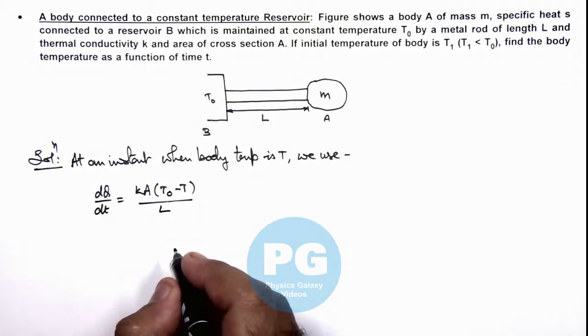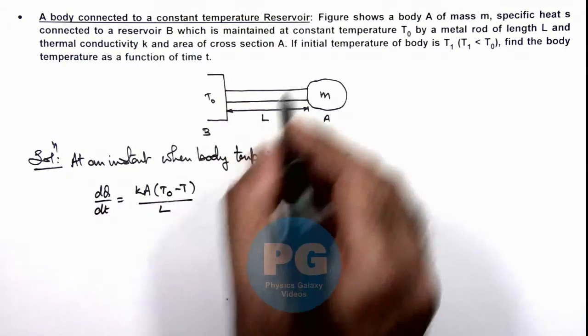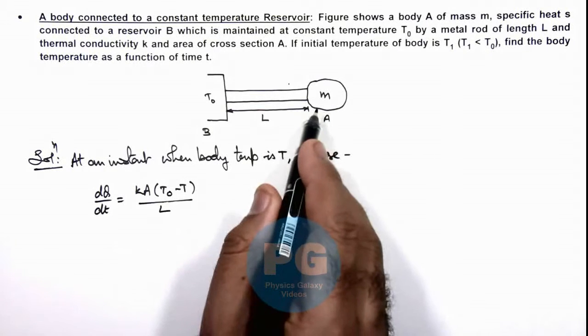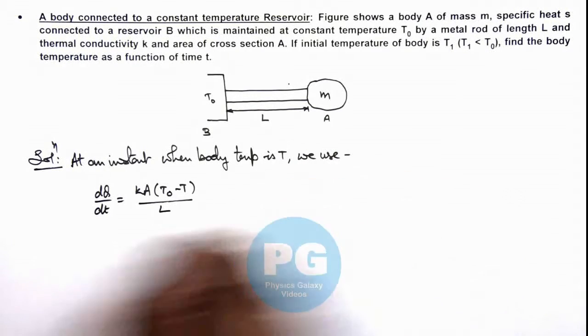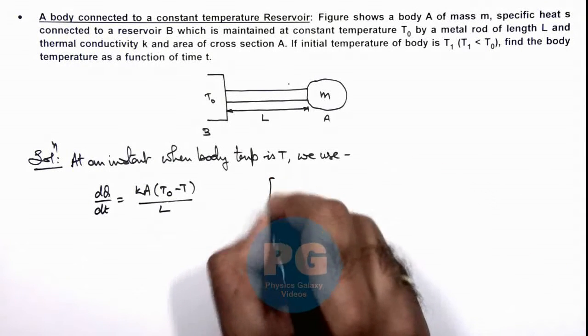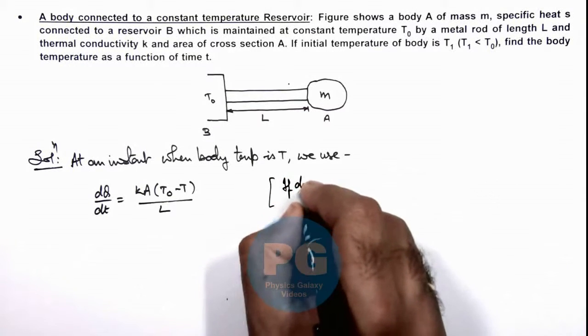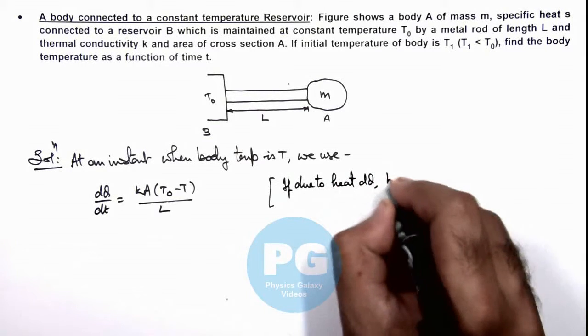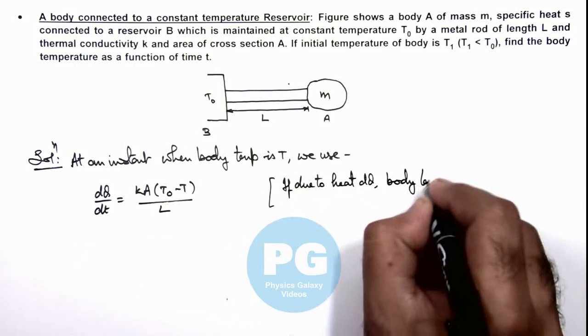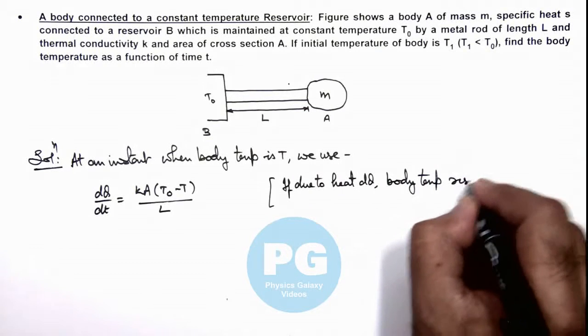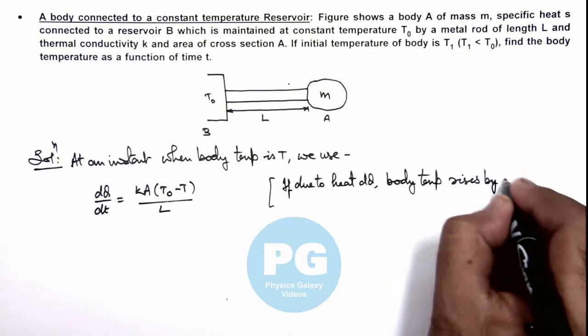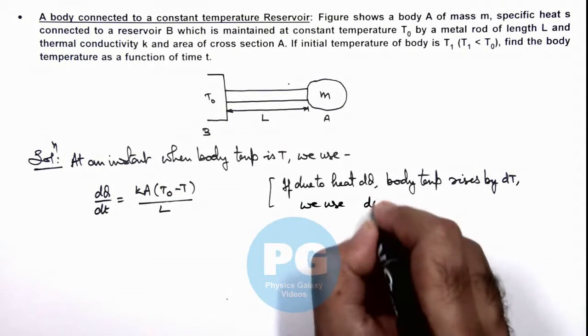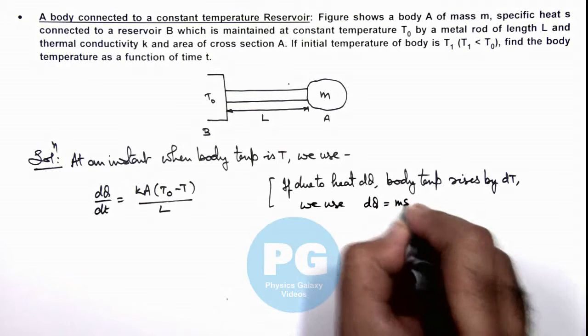So in this situation, due to dQ absorption of heat onto the body, if its temperature rises by dT, here we can write: if due to heat dQ body temperature rises by dT, we use dQ is equal to msdT.